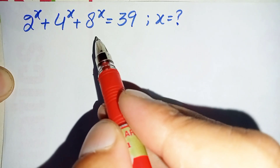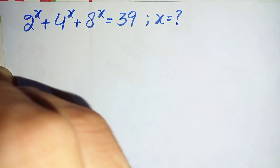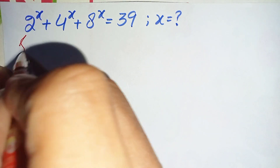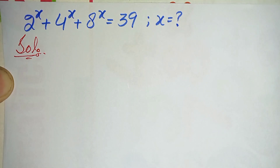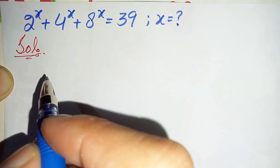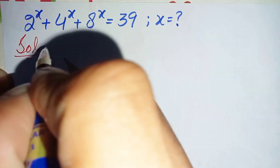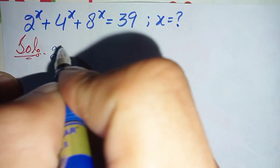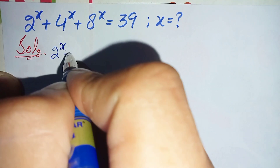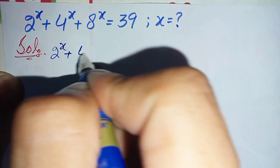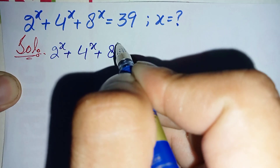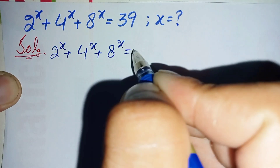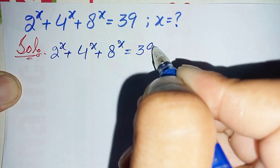Now to solve this problem properly and step by step, first we will write the solution and then we will rewrite this problem and try to solve it step by step. So the problem is 2 raised to power x plus 4 raised to power x plus 8 raised to power x is equal to 39.